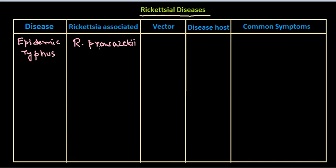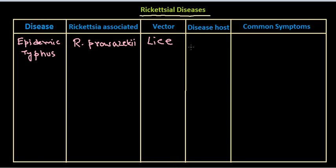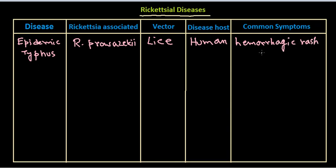The vector associated with this disease — because in all rickettsial infections there must be an arthropod vector, such as lice, mites, ticks, and so on, and also certain rodent vectors — in this case the vector is lice. The disease host, meaning the organism in which the disease occurs, is only humans. Common symptoms include a hemorrhagic rash and brain dysfunction.